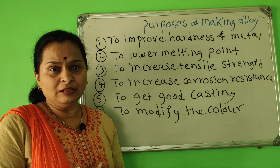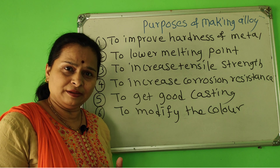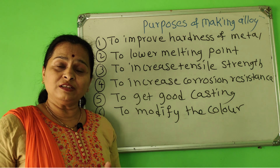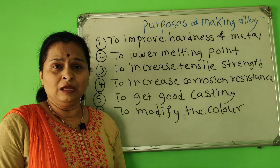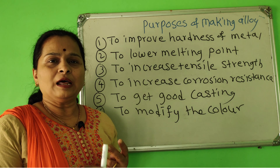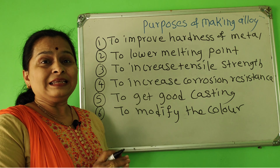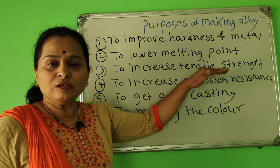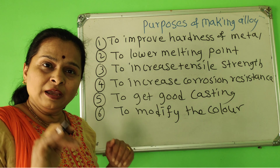To increase tensile strength — that means load carrying capacity — when 1% carbon is added to iron, the tensile strength of iron increases by 10 times. To increase corrosion resistance: in stainless steel, iron, carbon, nickel and chromium form an alloy of all four elements. Steel does not get stained, therefore it is known as stainless steel — meaning the corrosion resistance property of iron increases due to the addition of other elements.